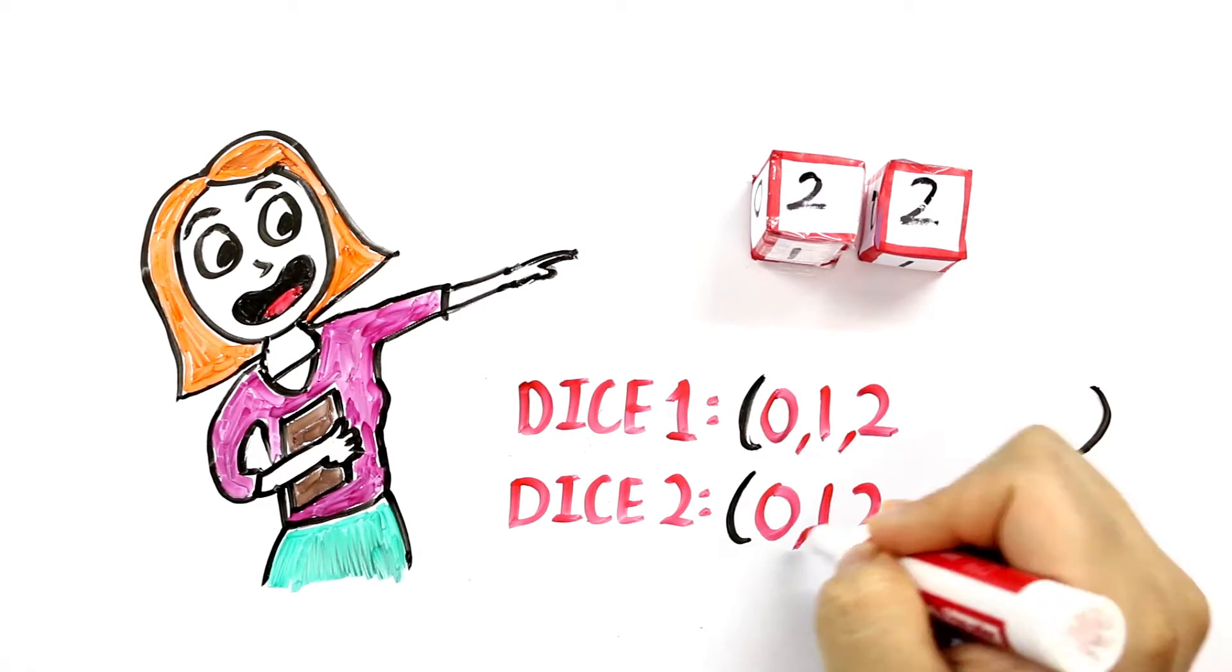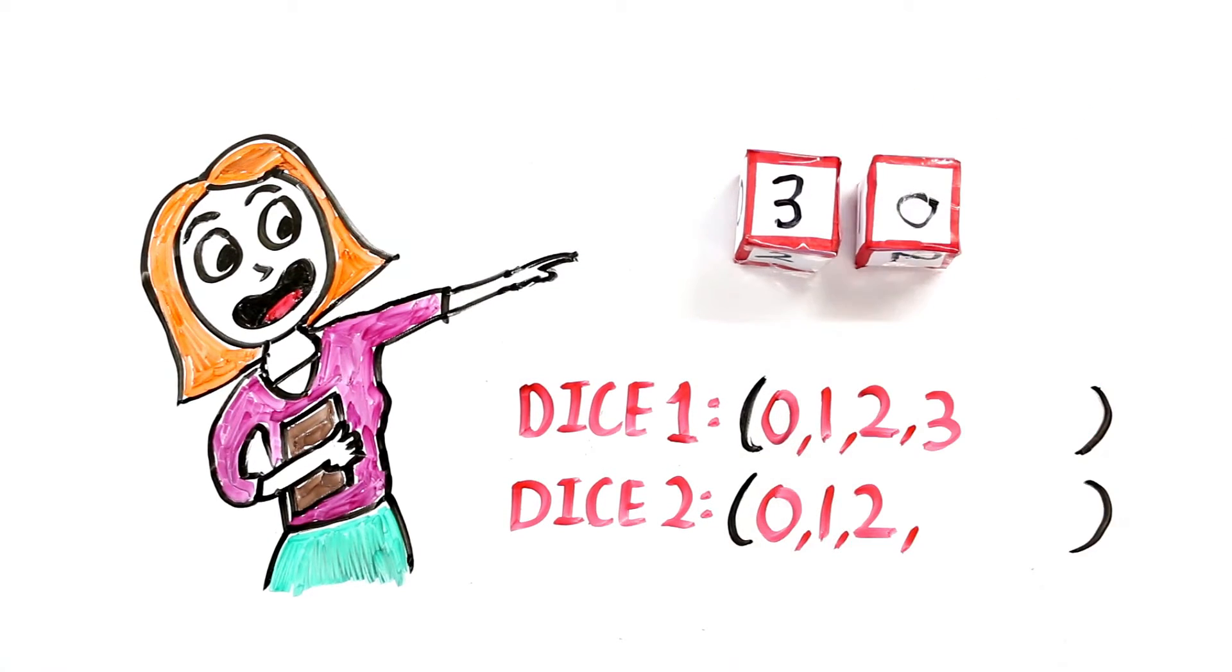After we do that, our next step is to write 3 on the first dice since we have to show dates like 30 and 31.